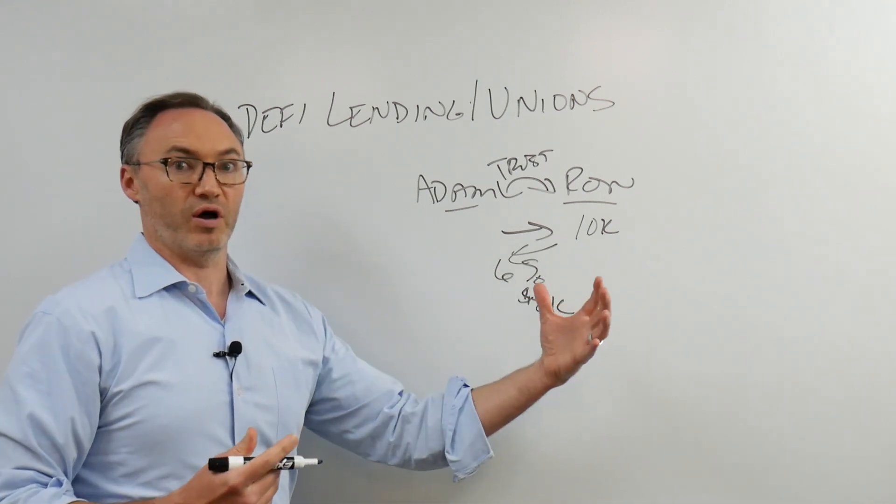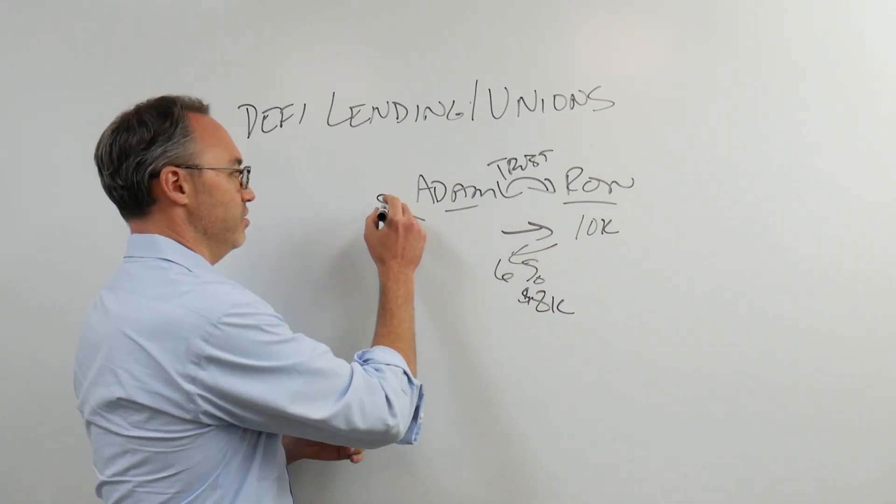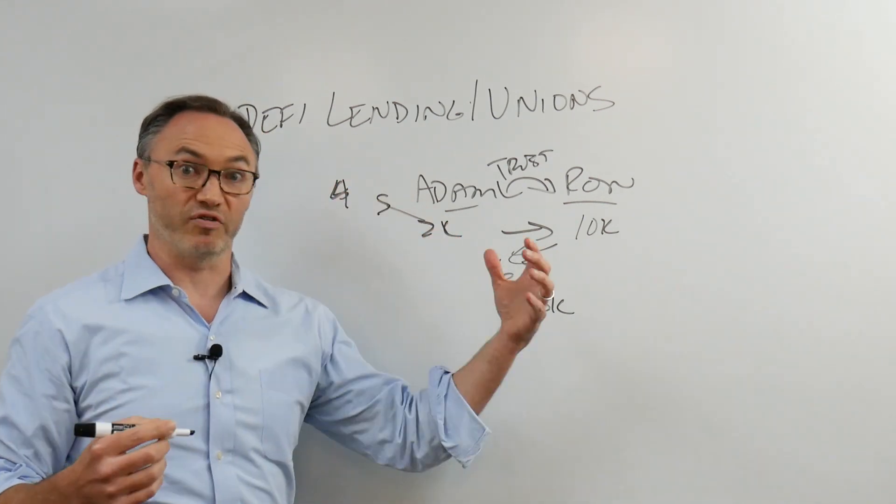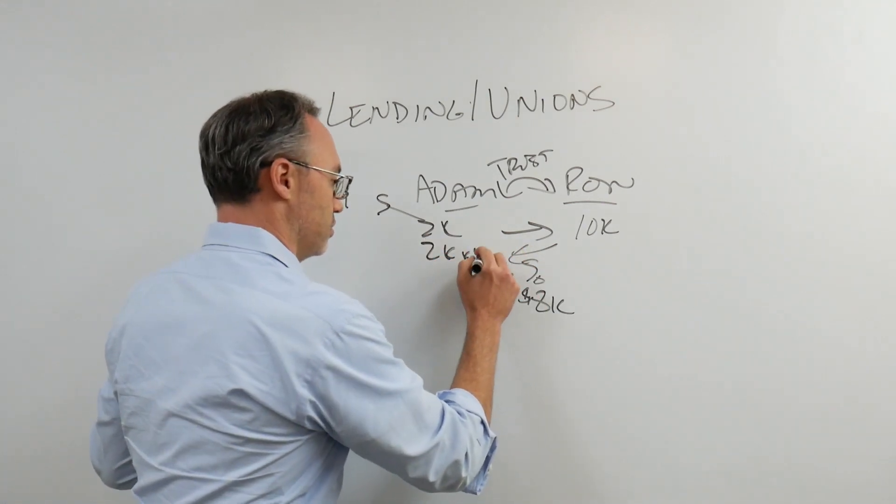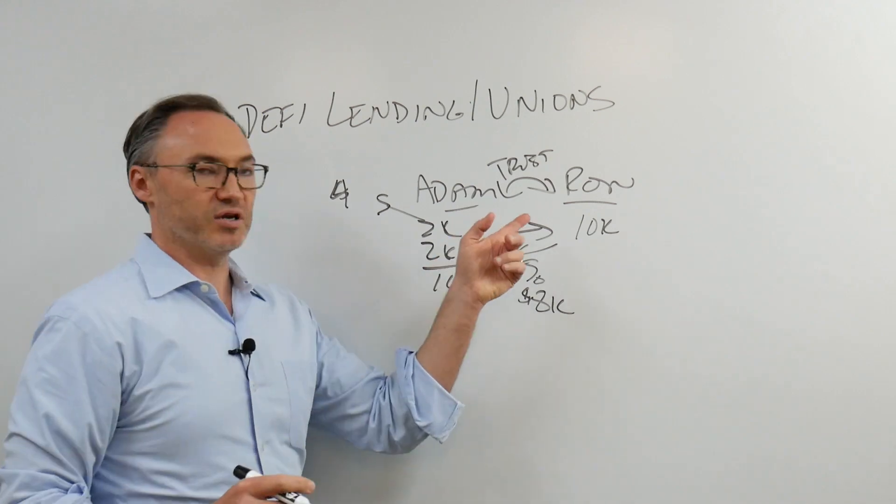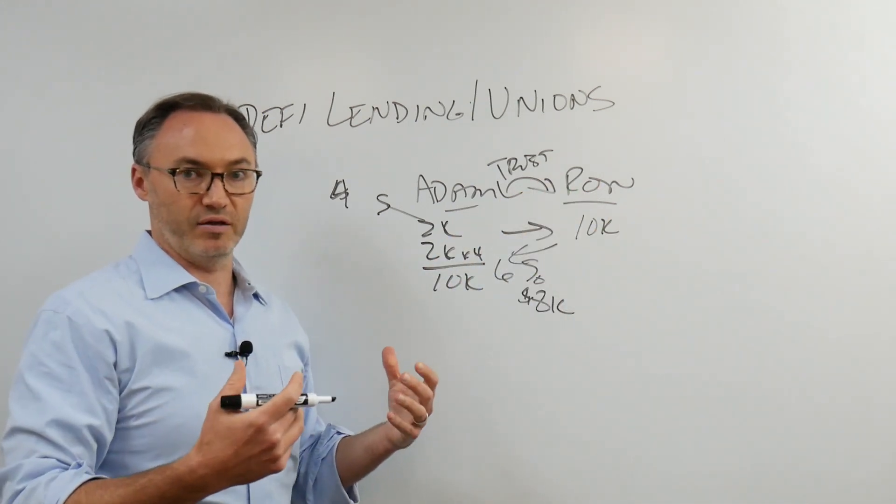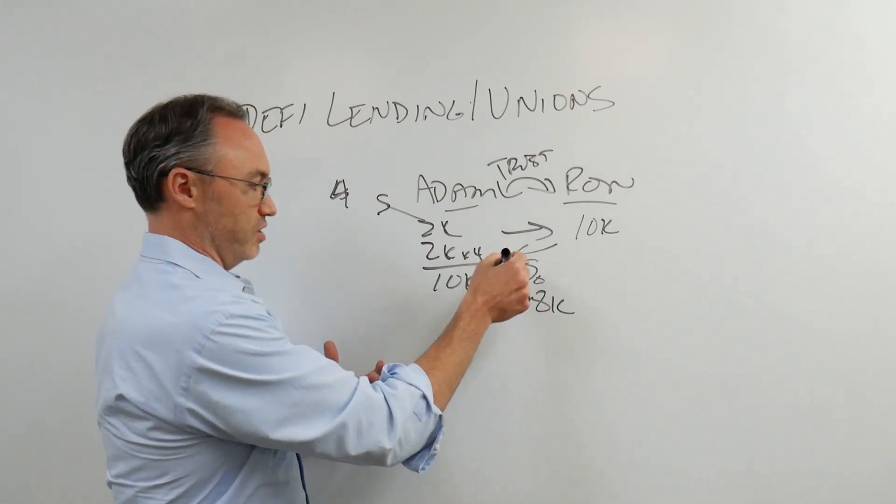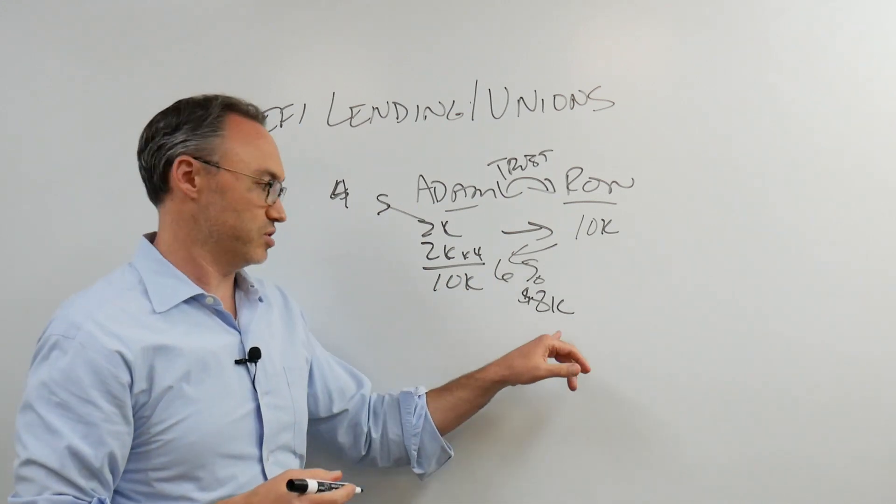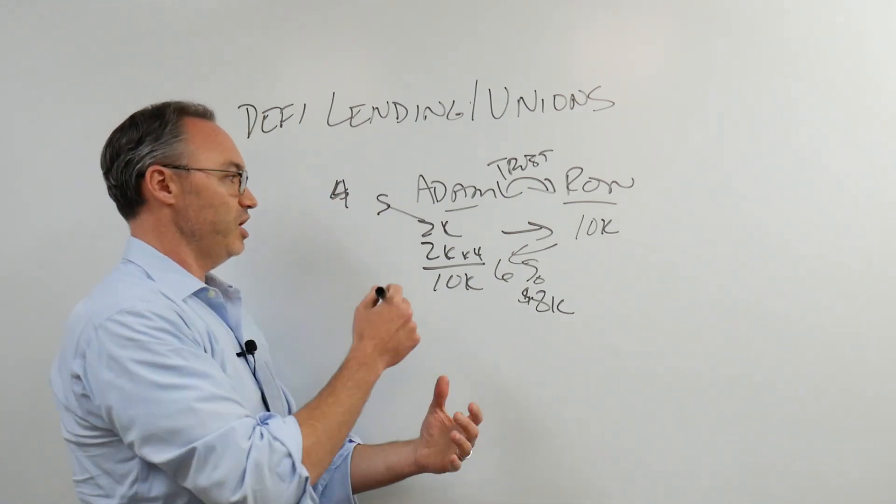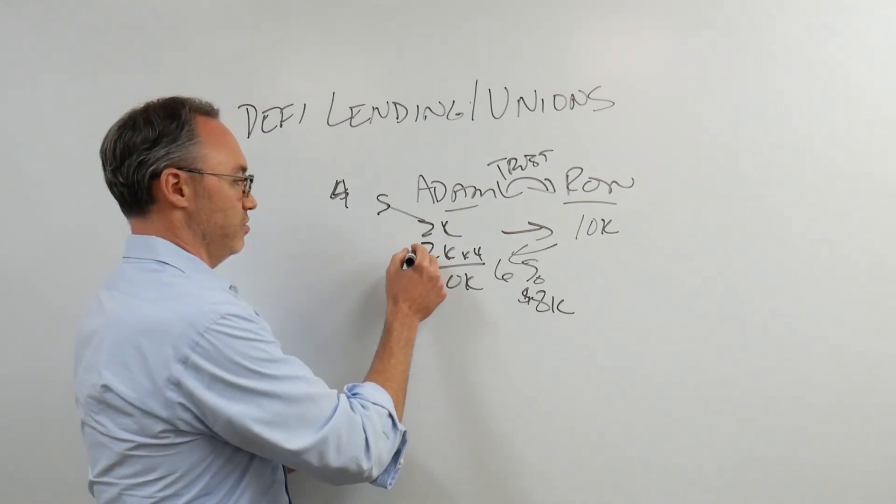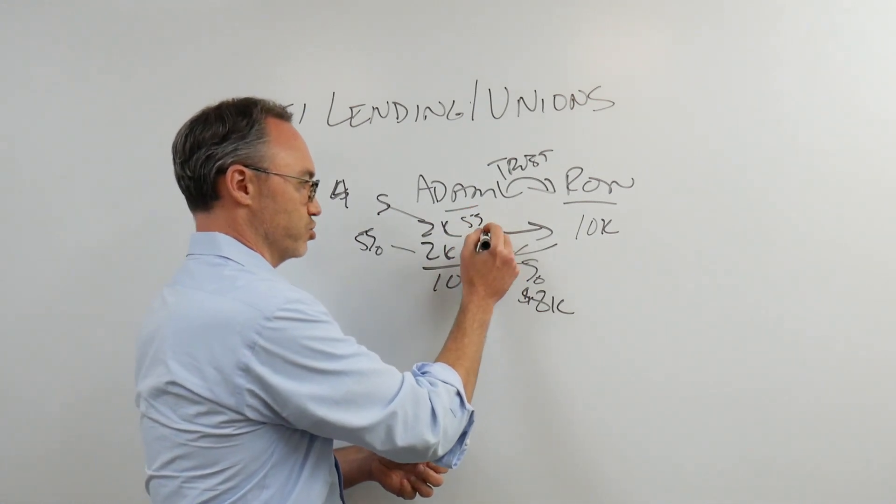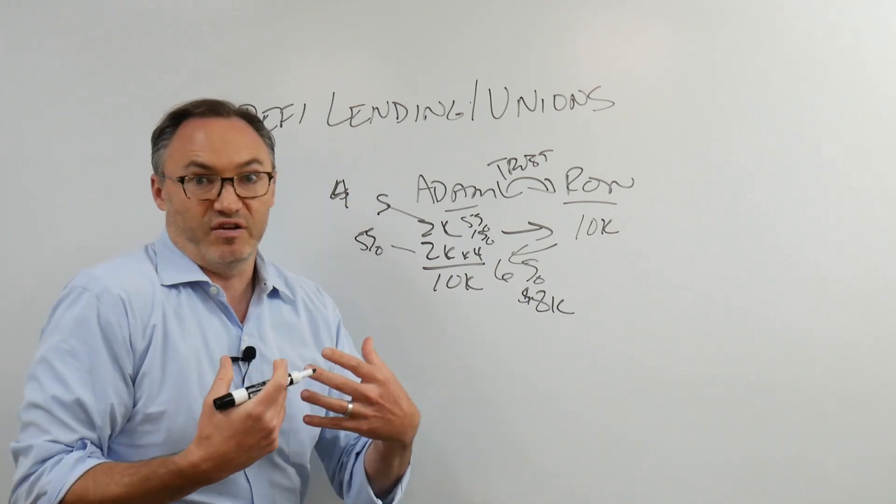Now, I might not want to lend Ron the full $10,000. I might go out and say, look, to four different people, I'll say, I'll put in $2,000. If each one of you puts in $2,000, we'll have our $10,000.